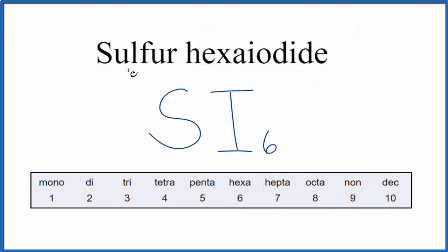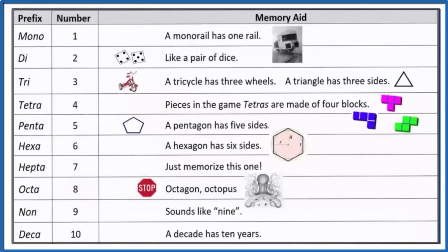Note that even though sulfur is by itself, for the first element in a molecular formula, we don't write mono. If you need some help memorizing these prefixes here, this table should help you do that.